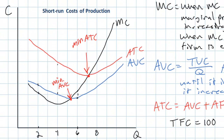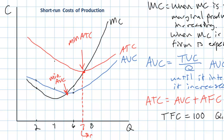We can identify the minimum ATC and the minimum AVC on our graph. We're getting closer to understanding how a firm can maximize its profits. A firm's profits are sometimes maximized when its average total cost is minimized. This firm knows that if it produces around 7 units, its average total cost is at its lowest point — so 7 is the cost-minimizing level of output. Once we add revenue curves to our graph with an average revenue and a marginal revenue curve, we will be able to determine the profit-maximizing quantity.